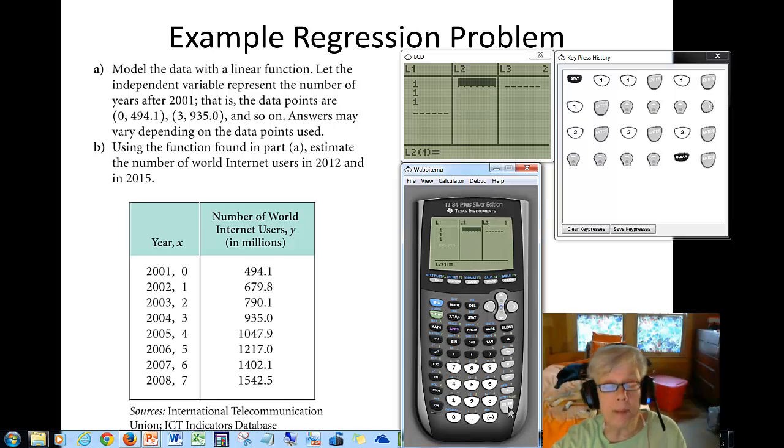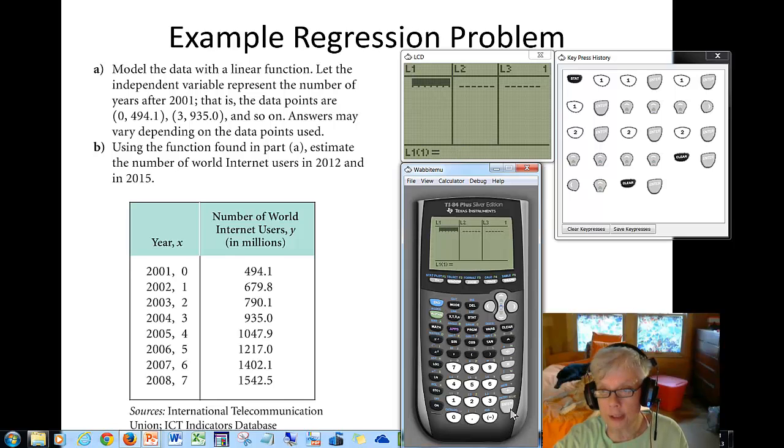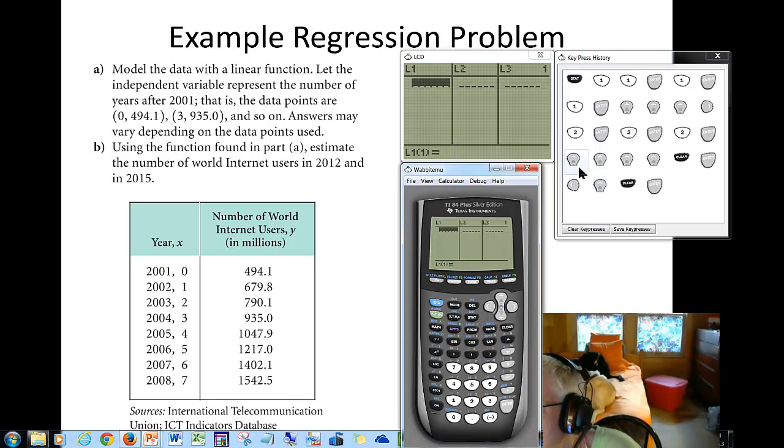Then I'm going to push clear and enter. Notice that makes all of my data go away. Now I'm going to push the left arrow key, I'm going to push the up arrow key so that I can go up to where L1 is highlighted, and again I'm going to push clear, enter, and that's how I've cleared all the previous data. You can pause the recording and copy down your keystrokes if you want.